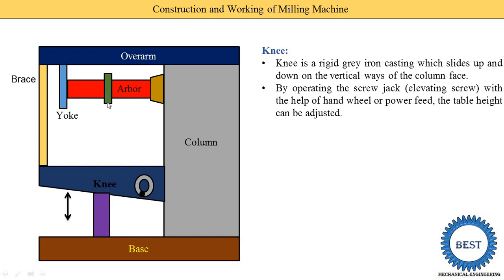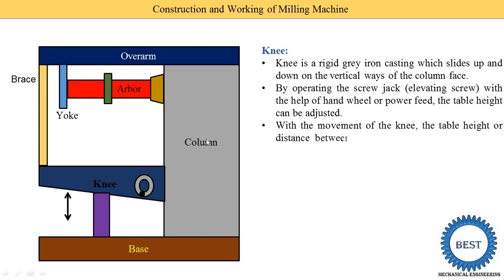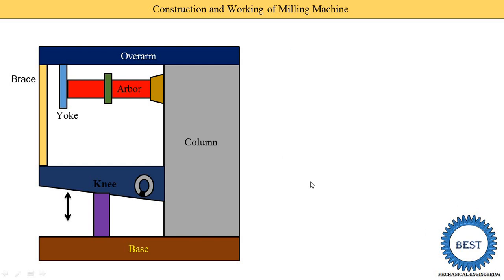The table height can be adjusted by moving the knee up and down, allowing us to adjust the distance between the workpiece and the table. This motion provides adjustment of the space between the workpiece and the arbour, because every workpiece has a different height and we need to adjust accordingly.